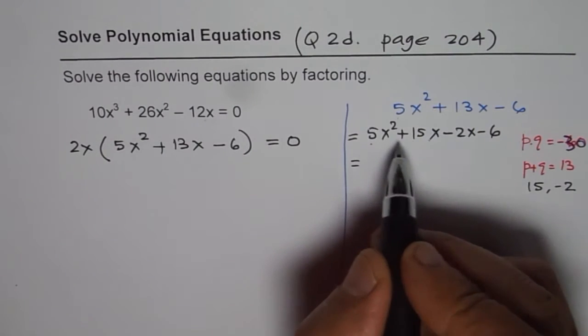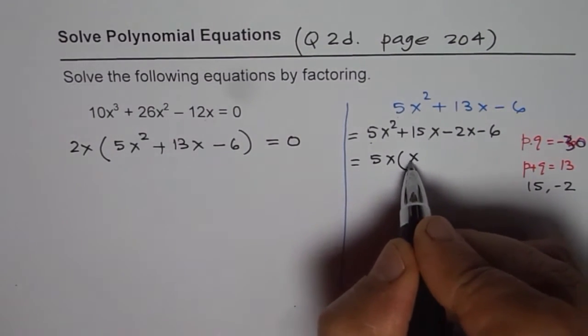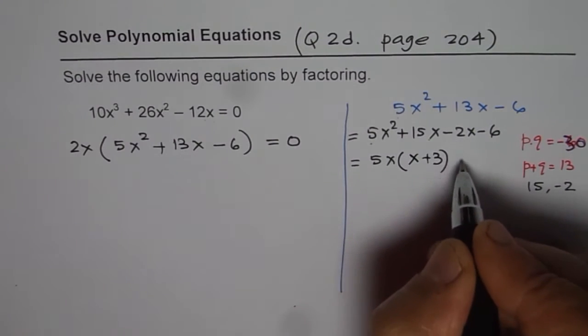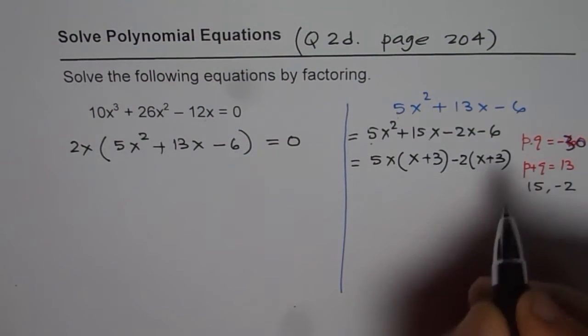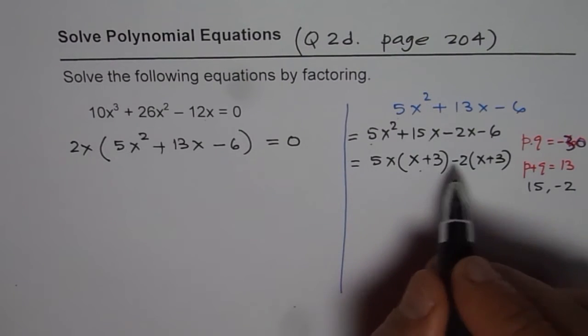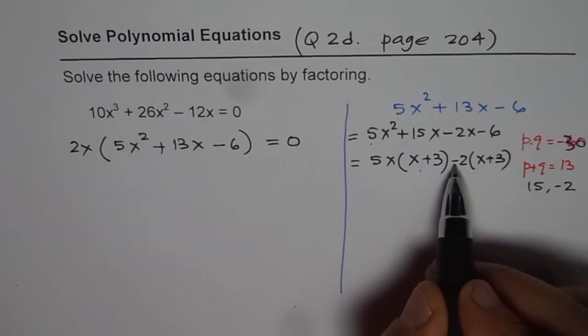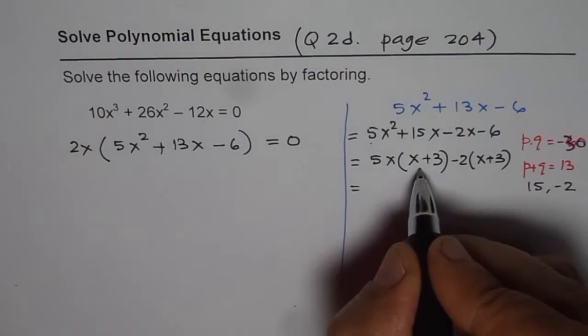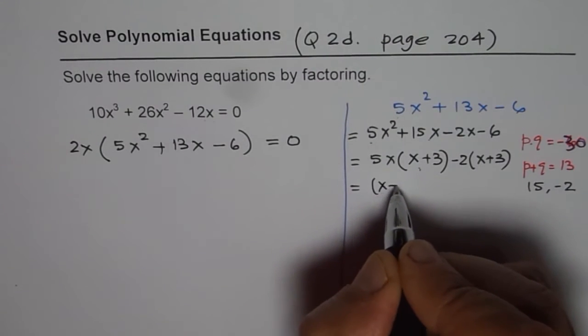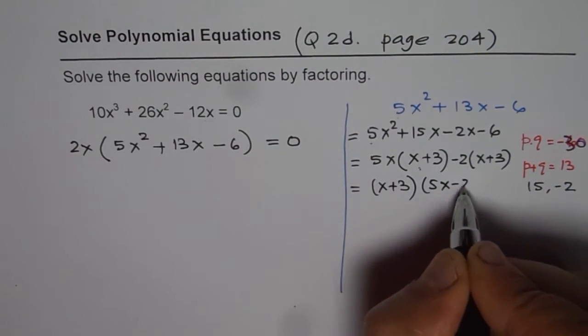Now, amongst the first two, 5x is a common factor. So, we can factor this out and get x plus 3 and here minus 2 is common. We again get x plus 3. If you don't get the same thing, you have to check what mistake you did. At times, when we factor minus, we do not change the sign. That would be a mistake. Now, we can factor x plus 3 and we get 5x minus 2.